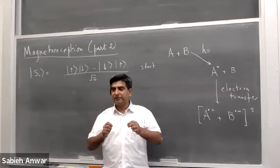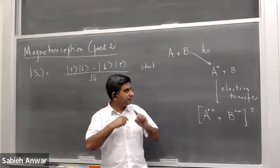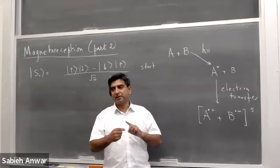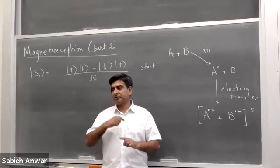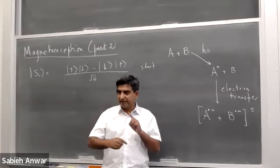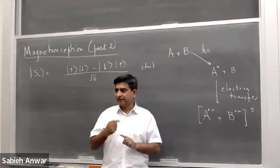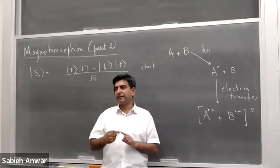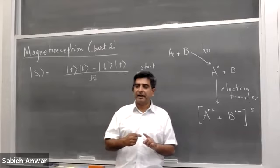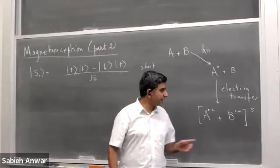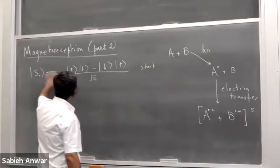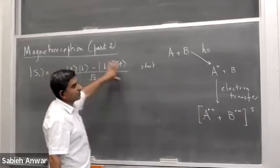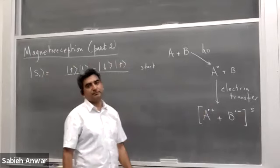Light shines on it and a reaction is triggered — a photocatalytic reaction. Light is acting as the photocatalyst, and this radical pair is formed. This radical pair has a certain quantum form.